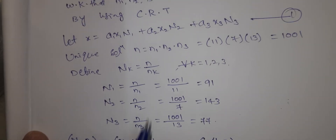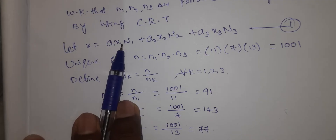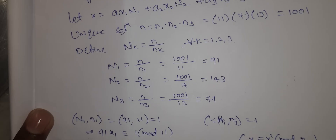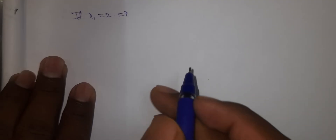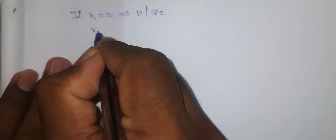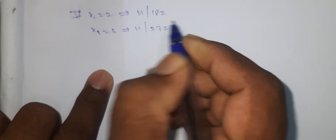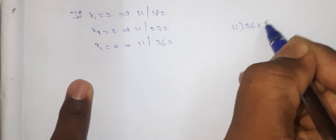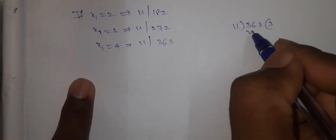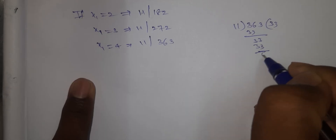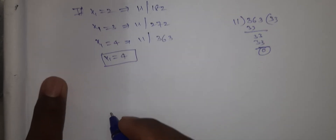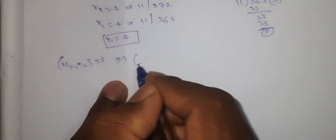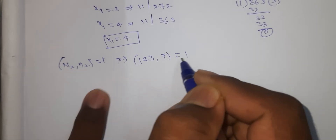So x1 = 4. Substituting into equation 1, the N1 term contributes 4·91·4. Next, consider N2: gcd(143, 7) = 1, which implies 143·x2 ≡ 1 mod 7.